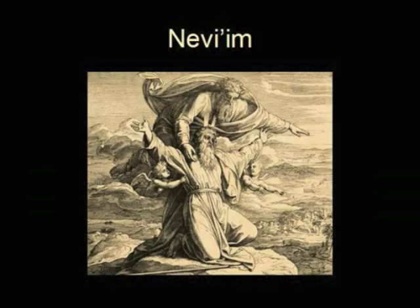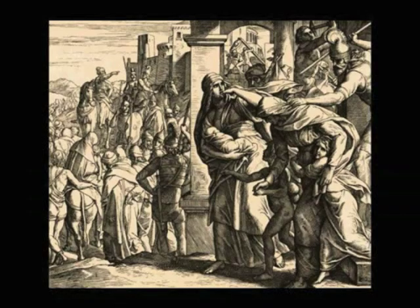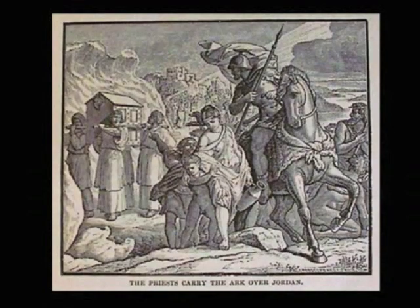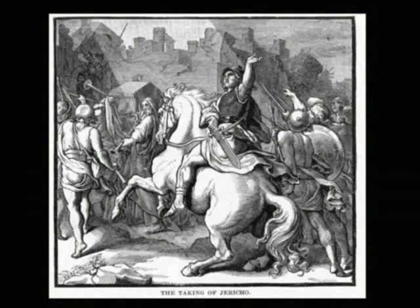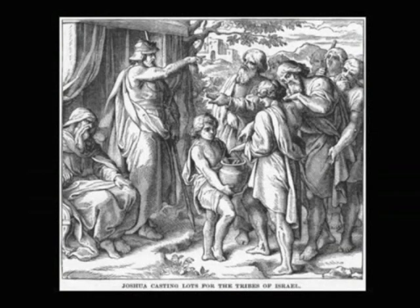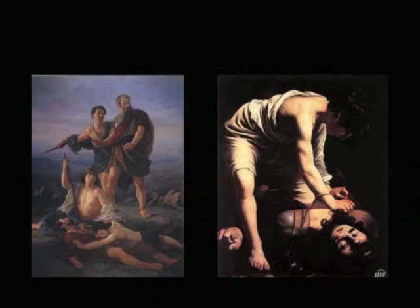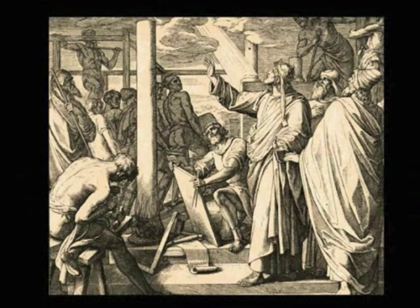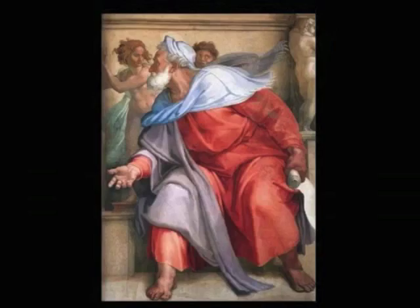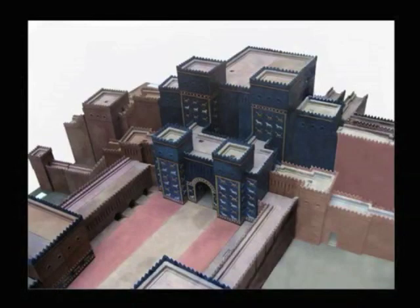The Nevi'im, the Prophets, includes the time period from the death of Moses through the Babylonian exile, approximately 1200 BCE to 587 BCE, and contains 19 books. The Nevi'im includes the Hebrews entering the land of Israel, the conquest of Jericho, the conquest of the land of Israel and the division among the tribes, the judicial system, the era of Saul and David, Solomon's wisdom and the construction of the first temple, the kings of Israel, prophecy, Messianic prophecies, and the Babylonian exile.